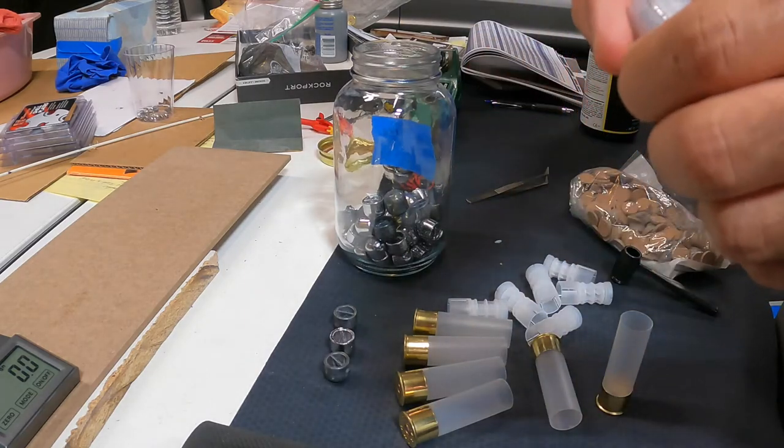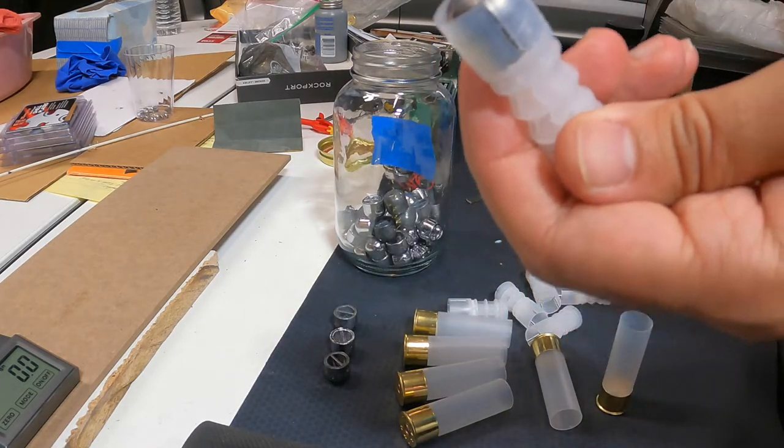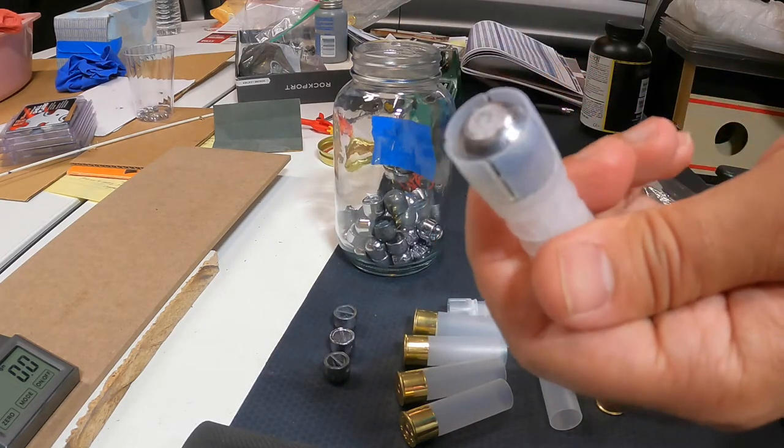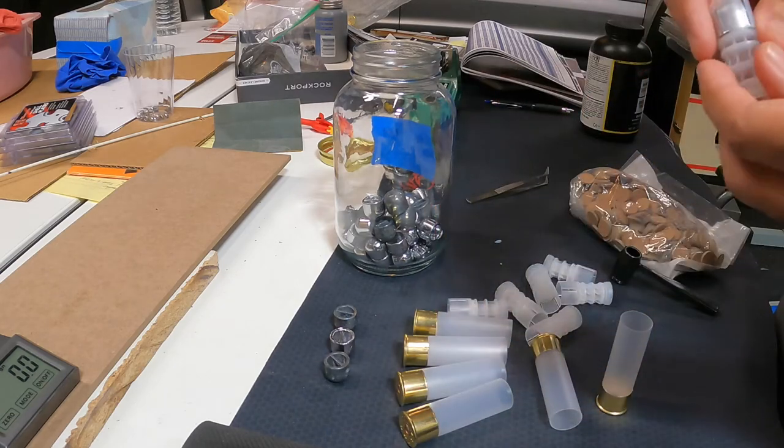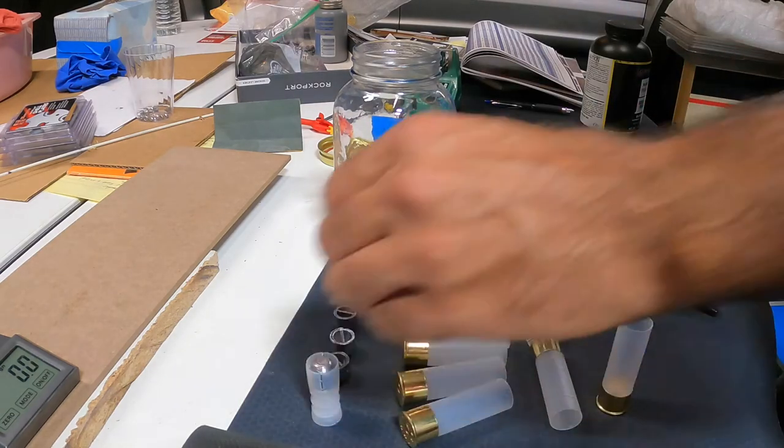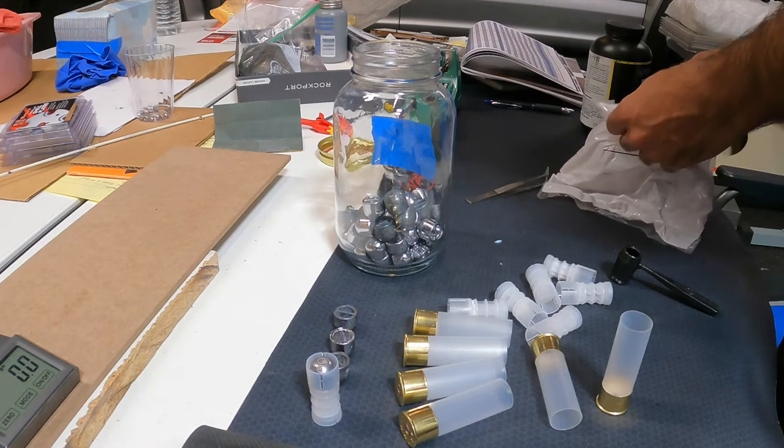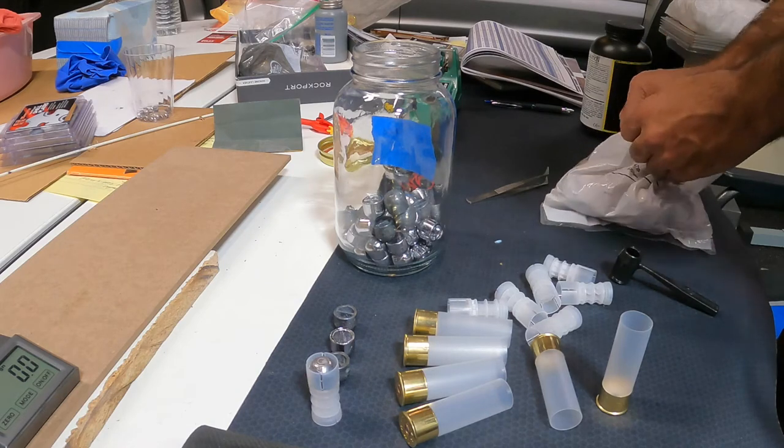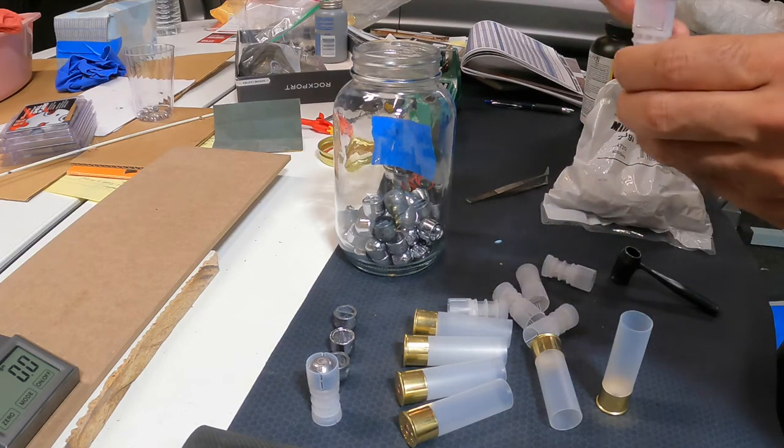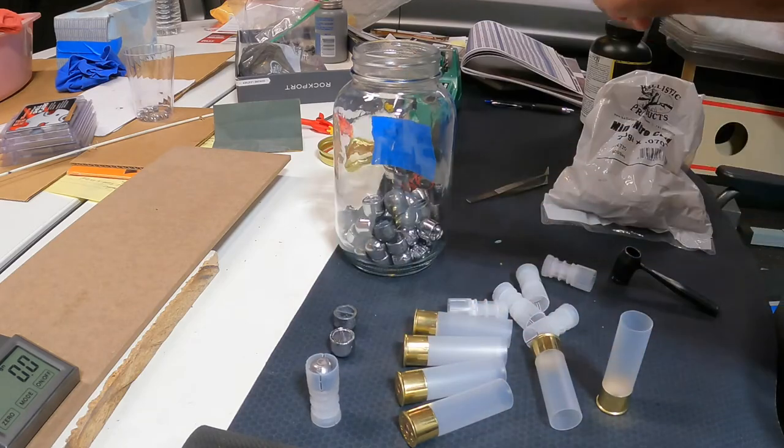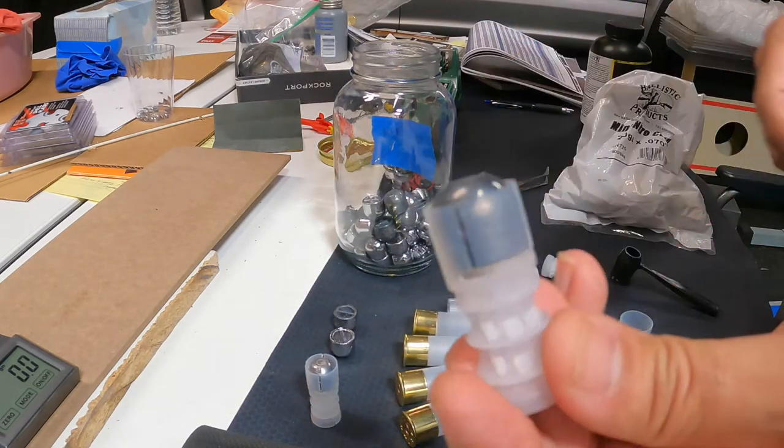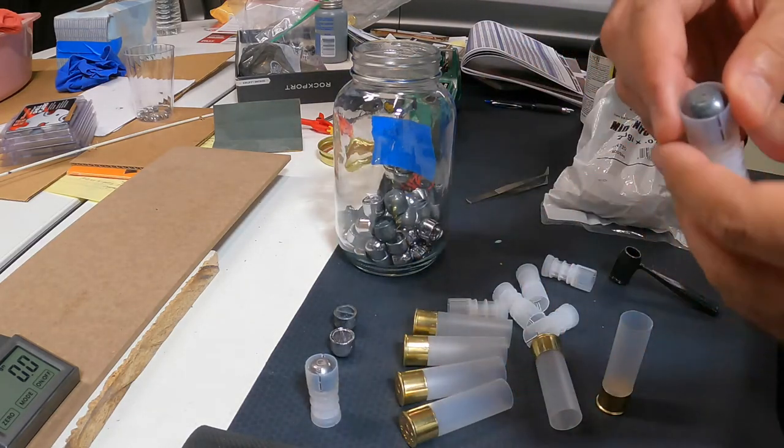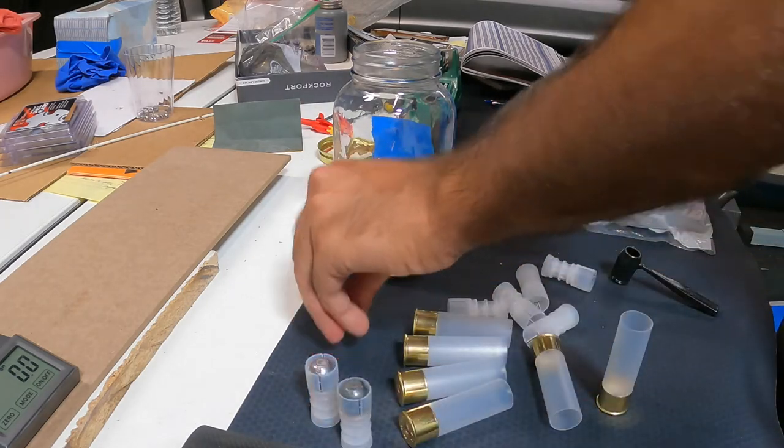We'll try five like this with the slug just inside the wad. This is a seven eighth wad with a one ounce slug and then I'm gonna try a few with the nitro card. See how that affects the crimp. Couple notes here.